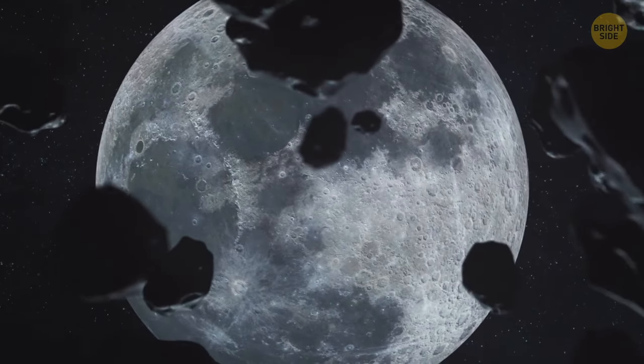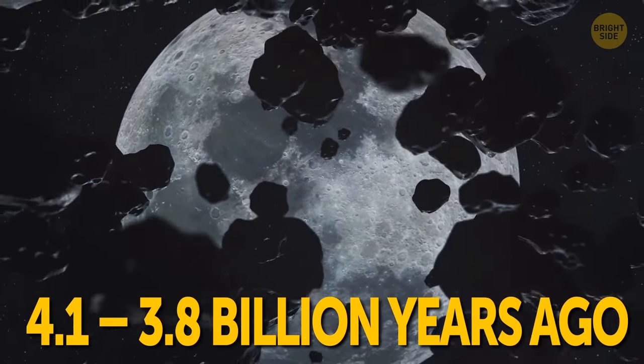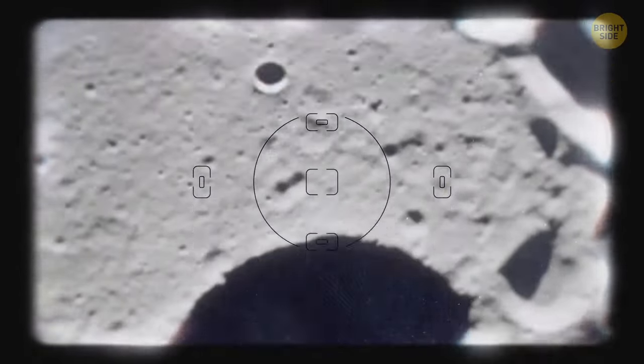Craters on the Moon were left by asteroids 4.1 to 3.8 billion years ago. They're still visible, only because geological changes on the Moon aren't as active as on Earth.